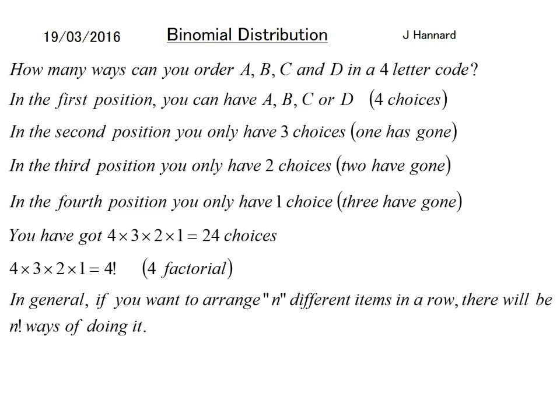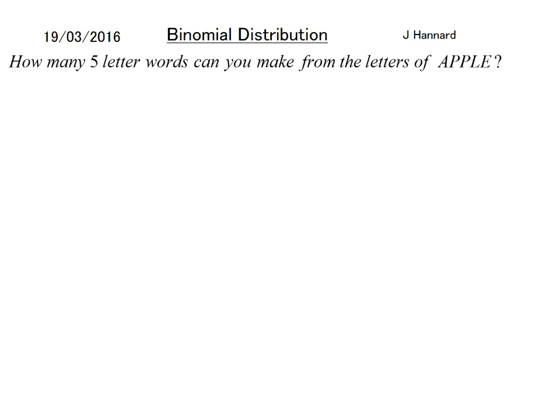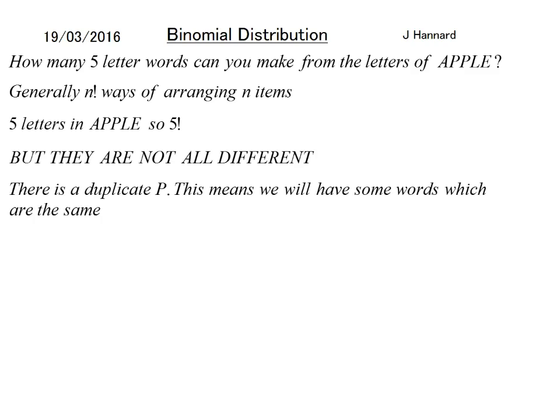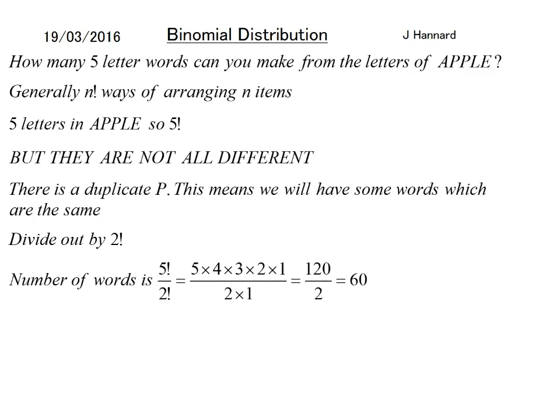So in general, if you want to arrange N different items in a row there will be N factorial ways of doing it — they must all be different. So how many five-letter words can you make from the letters of APPLE? You would just think it's five factorial, but they're not all different. Some of the words will actually be duplicates. Therefore you have to divide out by two factorial. So the number of arrangements is five factorial over two factorial, which is 120 over 2, equals 60.